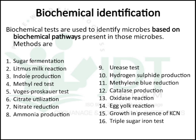The most important part of this topic is biochemical identification according to biochemical reactions. There are 16 biochemical identification tests based on biochemical pathways present in the microorganism. Different methods include sugar fermentation, litmus milk reaction, indole production, methyl red test, Voges-Proskauer test, citrate utilization, nitrate reduction, ammonia production, urease test, hydrogen sulfide production test, methylene blue reduction, catalase production, oxidase reaction, egg yolk reaction, growth in presence of potassium cyanide, and triple sugar iron test.